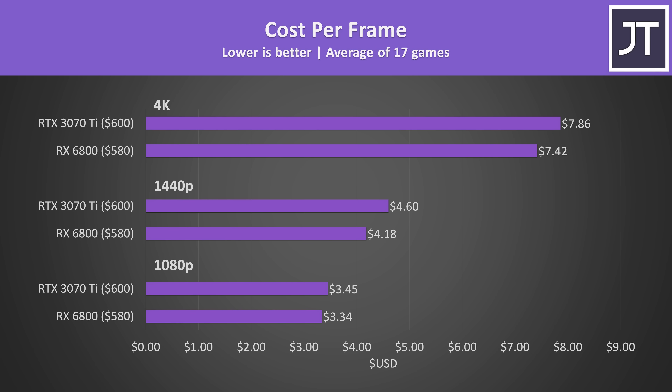If we assume MSRP, the RX 6800 is offering better value in terms of cost per frame, because it's meant to cost less and generally performs better — however this doesn't reflect the real world. The actual price of the 6800 is much higher due to supply issues, and although I'm making this video before the end of the 3070 Ti embargo, I'm sure those will cost way more too, making this comparison basically useless. Hopefully it will be useful in future if things ever settle down.